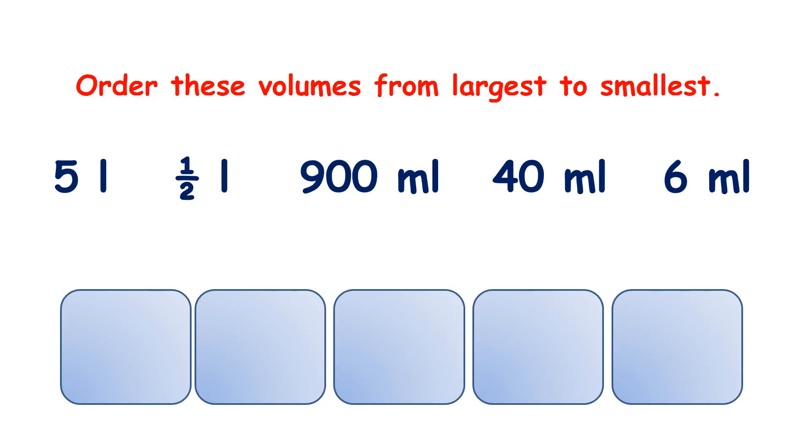Now pause the video and see if you can order these volumes from largest to smallest. We have 5 litres, half a litre, and half a litre is half of 1,000, so half a litre is the same as 500 millilitres. Then we have 900 millilitres, which is more than half a litre. Then we have 40 millilitres and 6 millilitres. So we're starting with the largest, which is 5 litres.